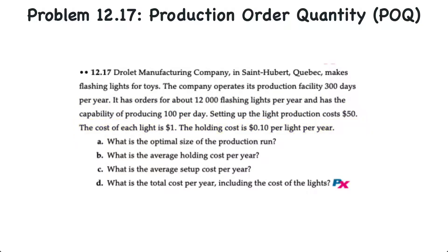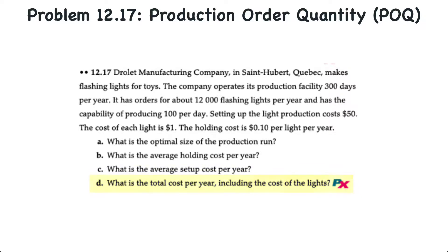We have four requirements for this problem. The first is to determine the optimal size of the production run. Requirement B is to determine the average holding cost per year, C the average setup cost per year, and finally the total cost per year including the product cost of the lights themselves.